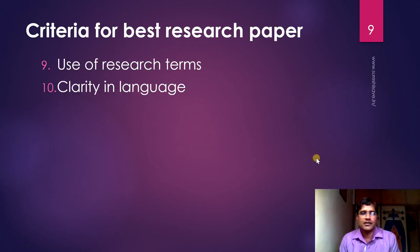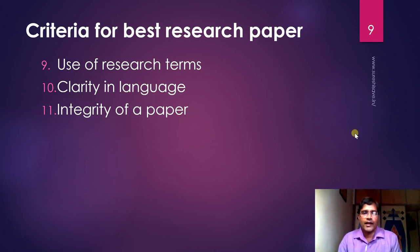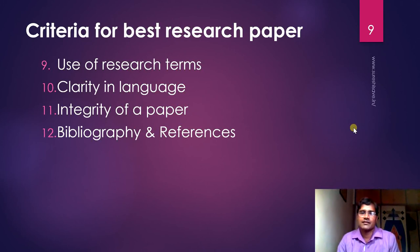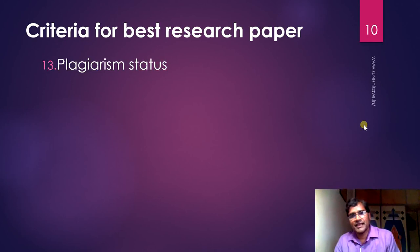Use proper research terms throughout the paper. There should be clarity in the language — instead of writing in first person singular, write in third person singular or in passive form. The integrity of the paper is important — whatever information you have mentioned should be consistently carried through from beginning to end. Mention bibliography and references; if you are taking quotations or definitions directly, give proper references and numbering. Also mention the bibliography you studied. Plagiarism status will be checked by online tools.